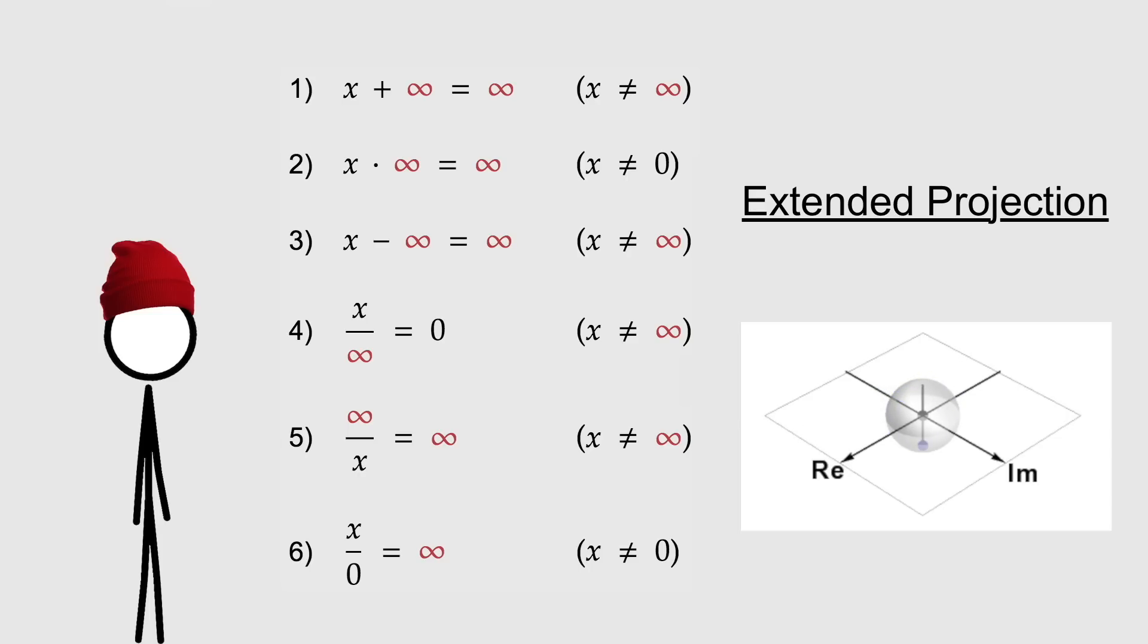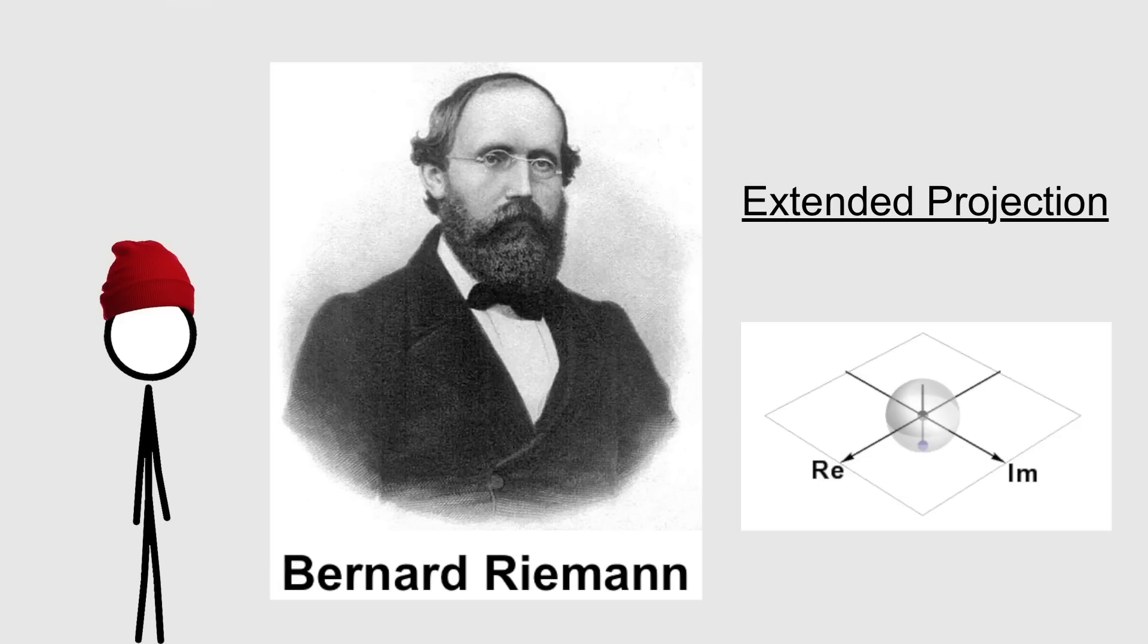We start with the plane of complex numbers. Then we project the plane onto the surface of a sphere. And to get the point at the very top of the sphere, that's the point at infinity, which we get by extending the complex numbers using the exact same six definitions right here on the left. Blah, blah, blah. The point is, with this sphere, we can divide any complex number by zero. Except for zero itself, of course. Yeah, and this sphere has a special name in maths. It's called the Riemann sphere, named after Bernard Riemann. You know, the Riemann hypothesis. Yeah, that guy.